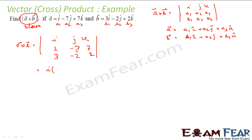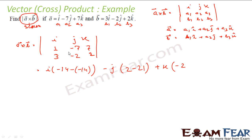Expanding: I into (-7×2 − 7×(-2)), which is (-14 − (-14)) = 0, so the I component is gone. Minus J into (1×2 − 3×7) = minus J into (2 − 21) = 19J. Plus K into (1×(-2) − (-7)×3) = K into (-2 + 21) = 19K. So A cross B is 19j-cap plus 19k-cap.